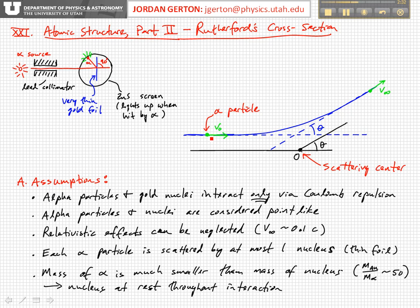The alpha particle comes in, starting off at infinity — that is, far away from the nucleus. Before it gets deflected, it's coming in this direction. In scattering theory, we designate the distance that corresponds to the distance of closest approach of the incoming particle to the scattering center if there were no interactions. If there were no interactions, it would follow this blue dotted line.